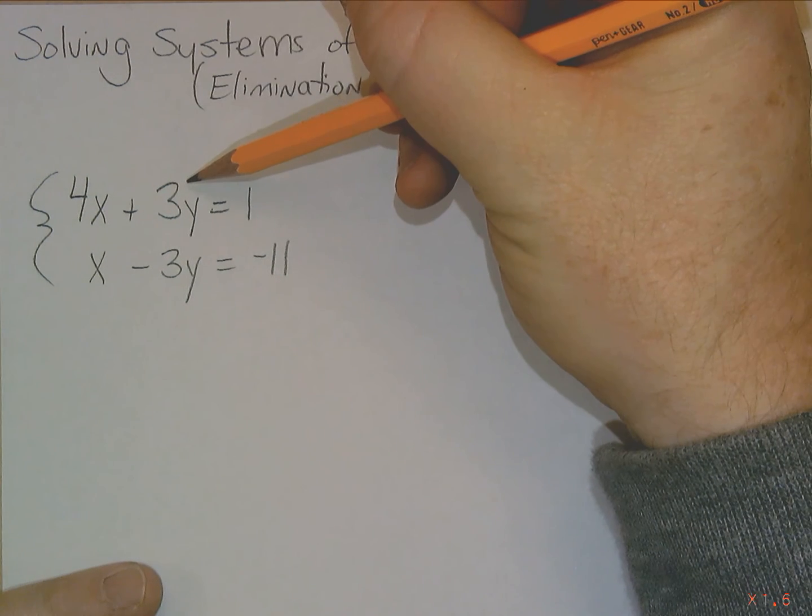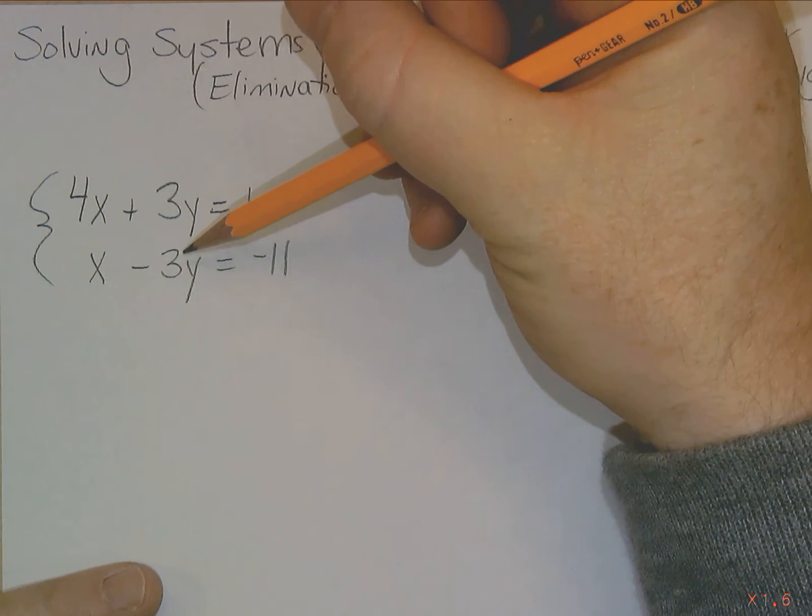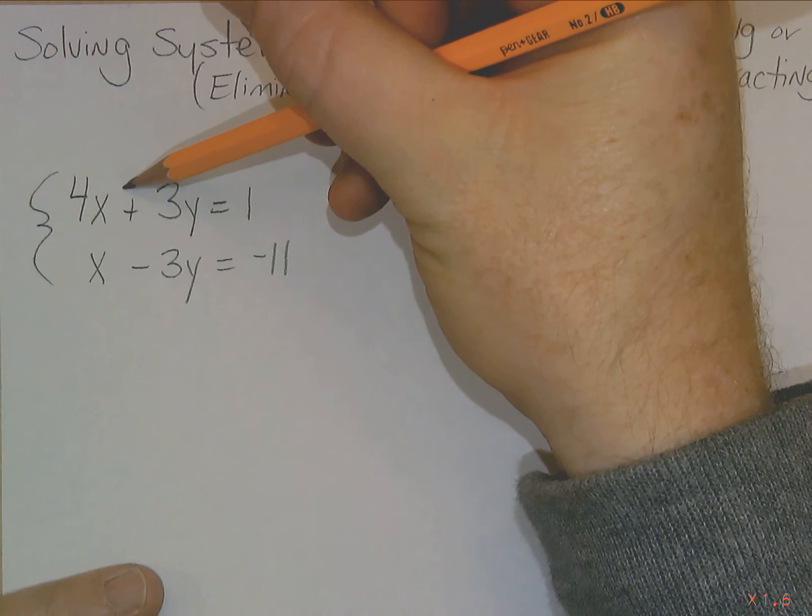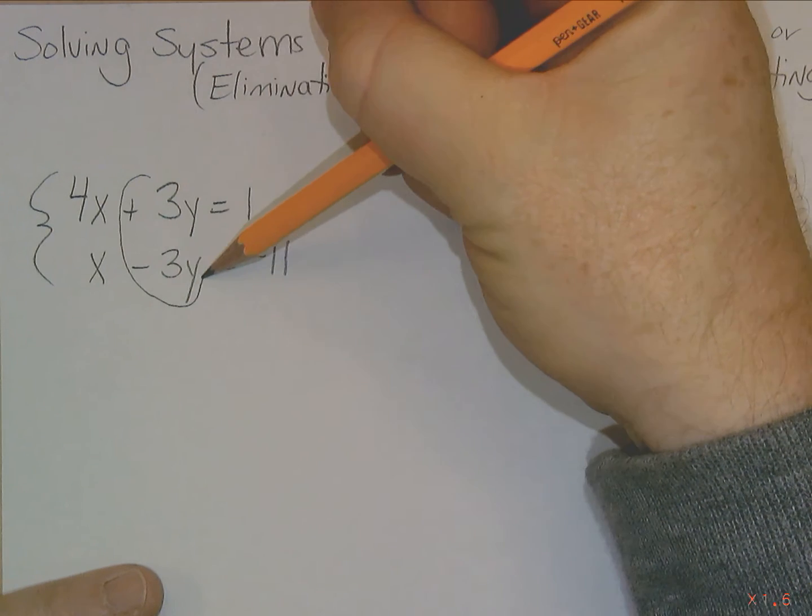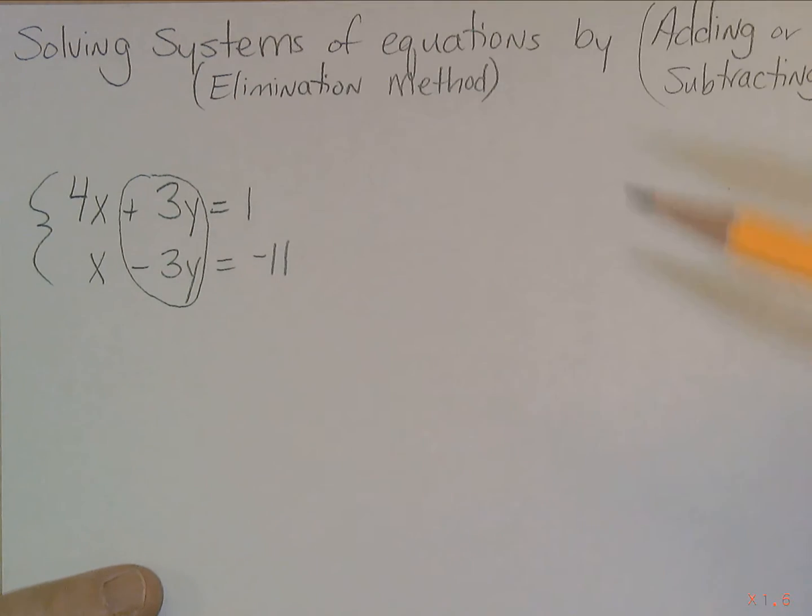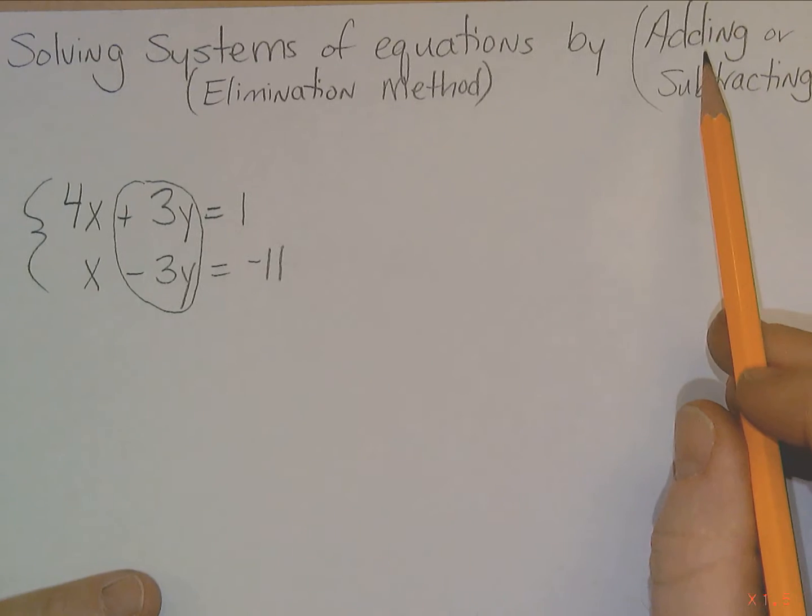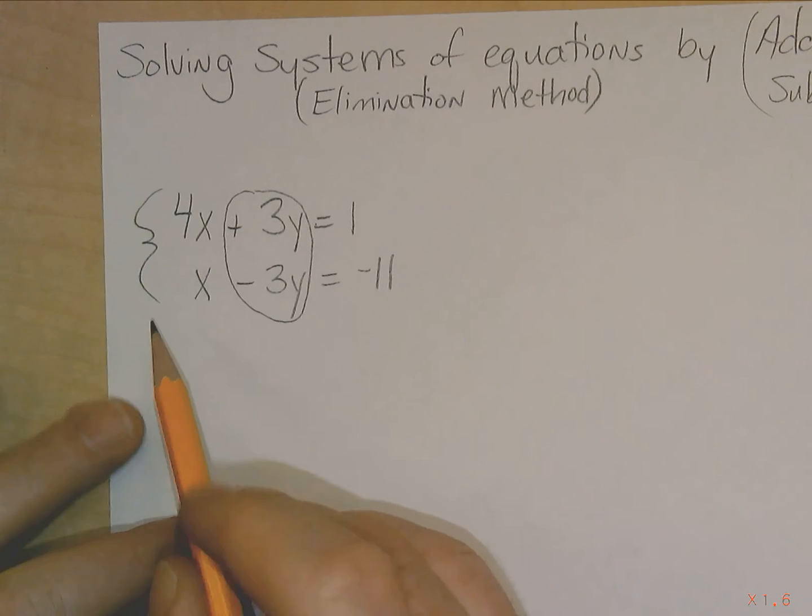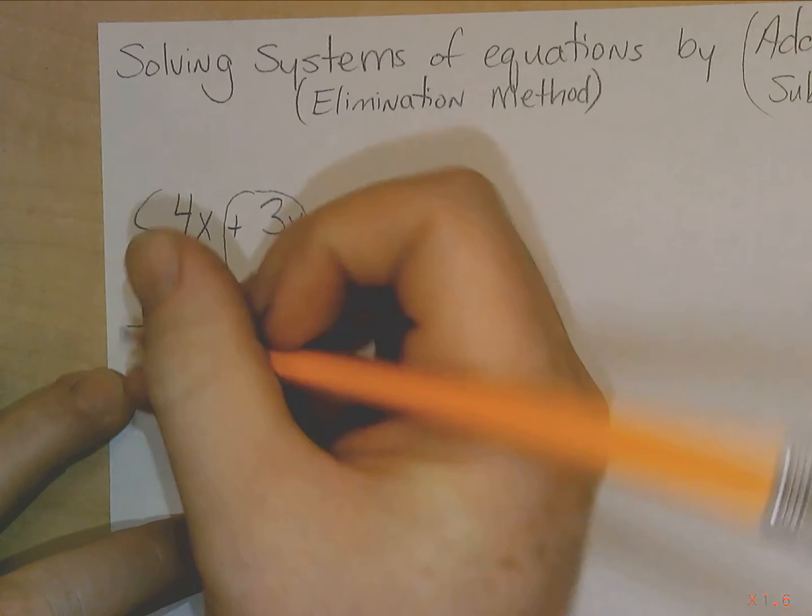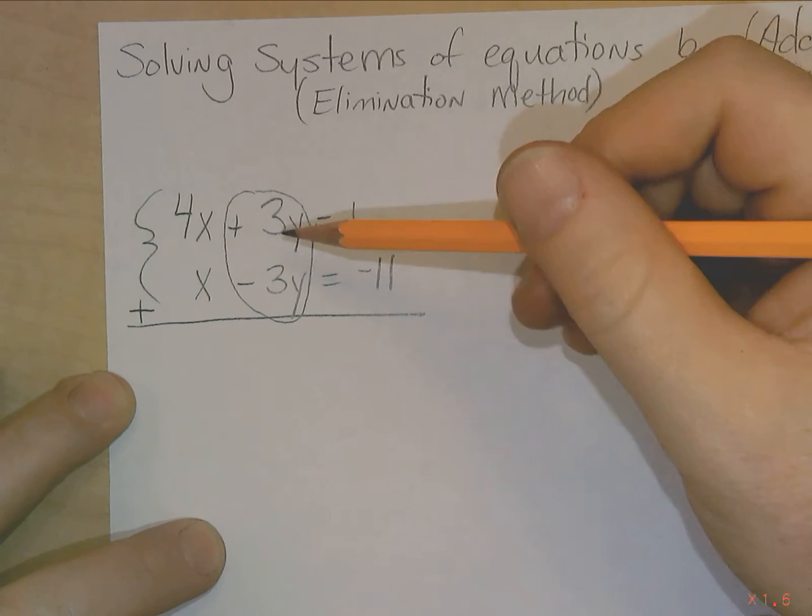You've got positive 3y or plus 3y, you've got negative 3y, so these would work. So the method that you would use for this would be, instead of subtracting, you would want to add them, because if you added these two together, they would cancel each other out.